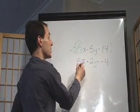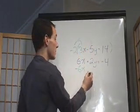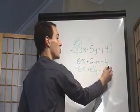Negative 2 times 3x gives us negative 6x. Negative 2 times negative 5 gives us positive 10y. And negative 2 times 14 gives us negative 28.